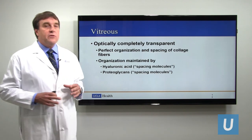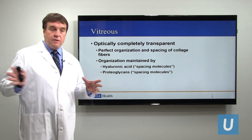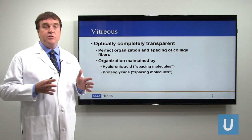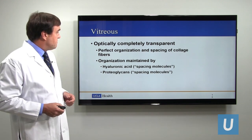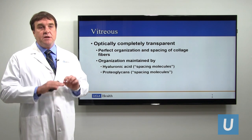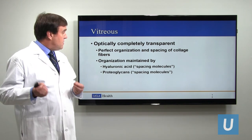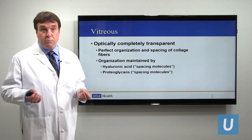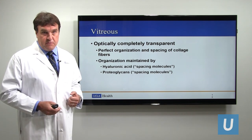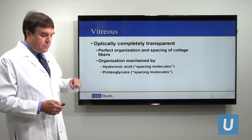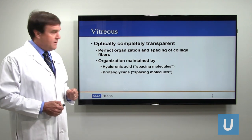The vitreous is optically transparent so that the picture focused by the cornea and the lens can travel through the eye cavity onto the retina. The perfect organization of the collagen fibers within the vitreous cavity — maintained by what I call the spacing molecules, hyaluronic acid and proteoglycan — allows for the transparency of the vitreous. As the vitreous becomes less organized, that transparency suffers, and those disorganized areas eventually become the floaters.